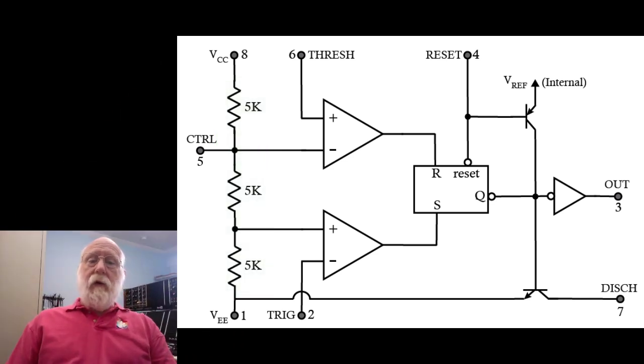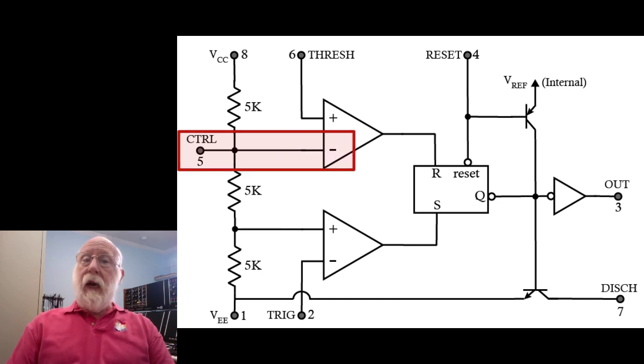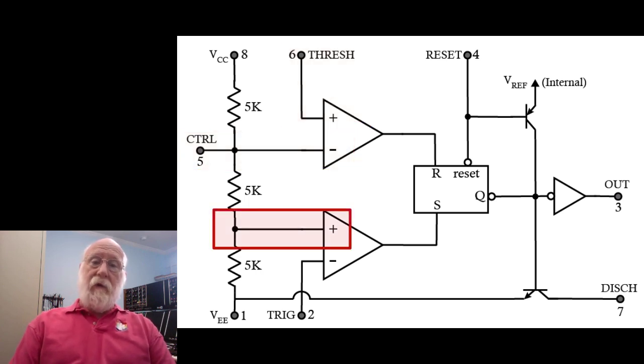Now, you will note that there is a pin labeled control connected to that upper voltage divider point. We'll talk more about that later. And that is also connected to a comparator. And note that the positive end of the comparator goes to an external pin labeled threshold. The lower voltage divider point is connected to another comparator. And the negative input of that comparator is connected to an external pin called trigger.